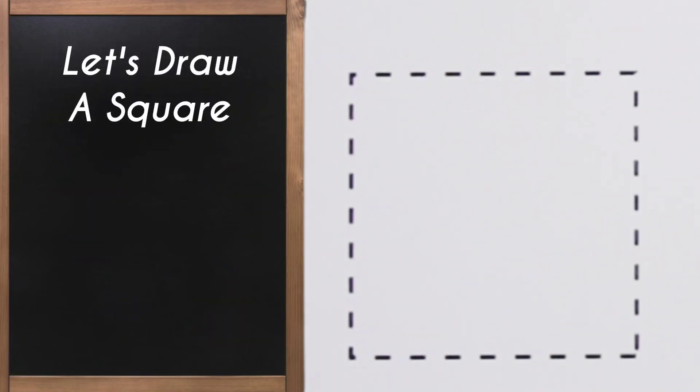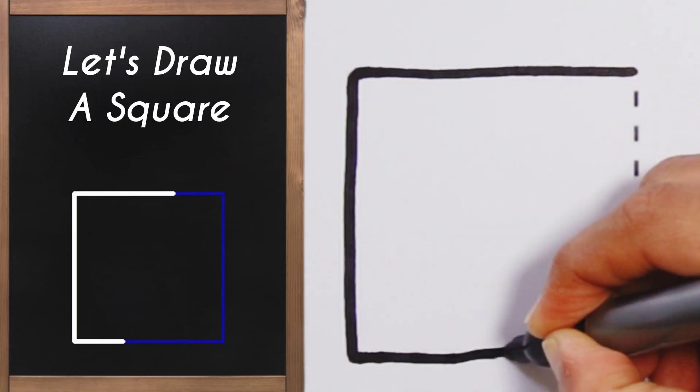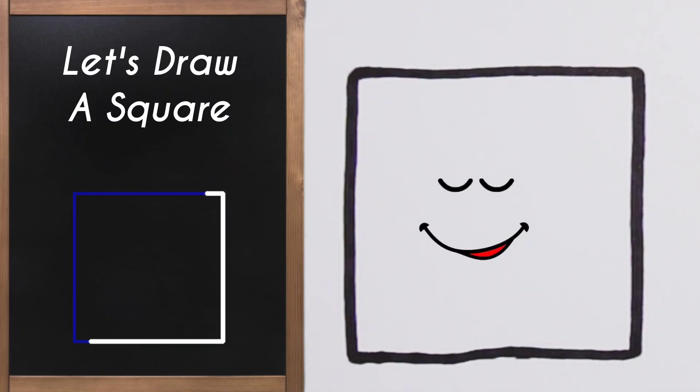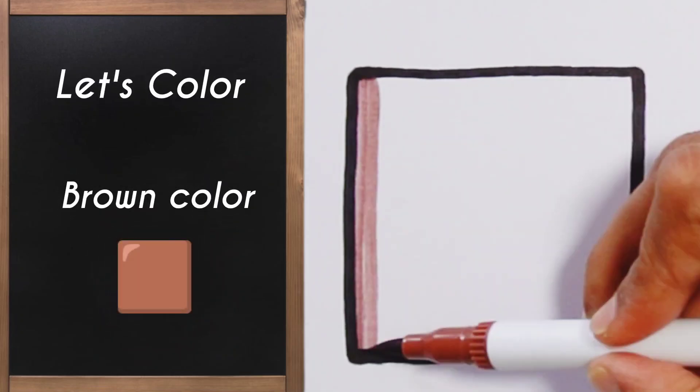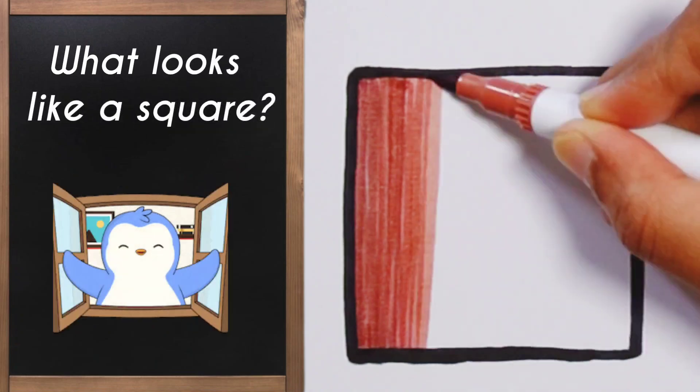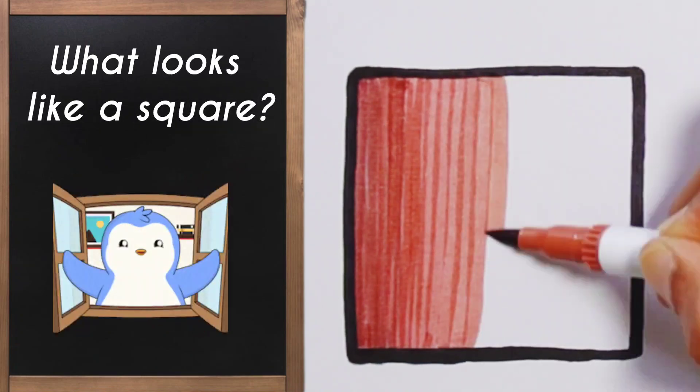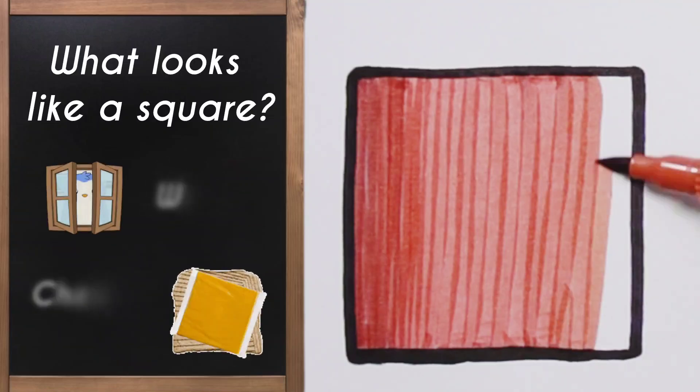Let's draw a shape with four equal sides. Straight down, across, and up - it's a square! Can you think of objects that look like a square? A window, a cheese slice - they all look like squares!